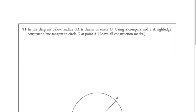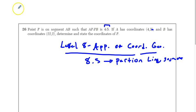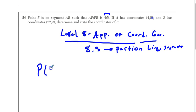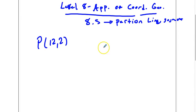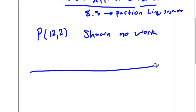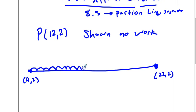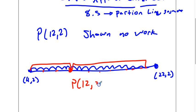Now, follow me back — I want to tell you something really important about this question. You cannot just put P is (12, 2) as your answer and show no work. This happened on last year's Regents. You actually have to show some sort of work to get credit here. All you need is a rough sketch showing the points (4, 2) and (22, 2), that you counted 18 units and divided by 9, then marked every 2 units. Then you can state that P is (12, 2). You have to show some sort of work.